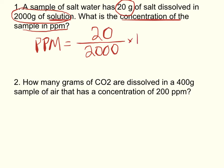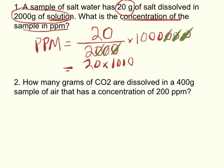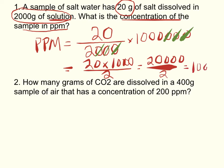So we have 20 divided by 2,000 times one million (one with six zeros). We can cancel zeros: one zero on top with one below, leaving us with 20 times 1,000 divided by 2. That's the same as 20,000 divided by 2, which equals 10,000 PPM — final answer.